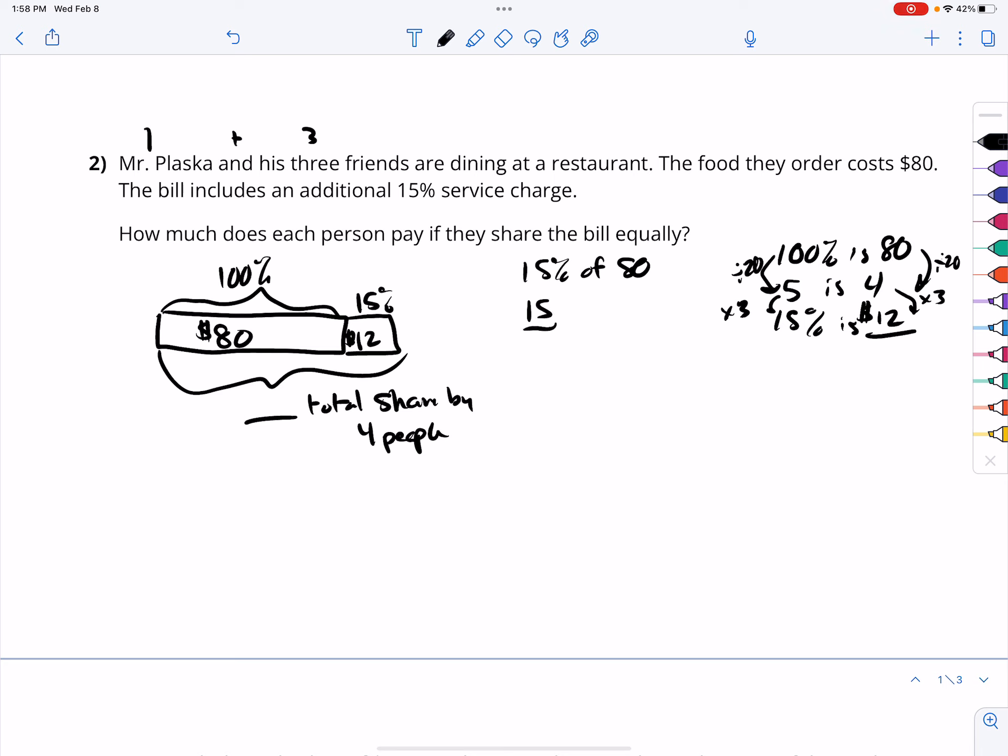Now, if we wanted to check this another way, 15%, or 15 out of 100, of 80. Let's do some simplifying. I'm going to first simplify this way by dividing by 10. So, I'm left with 15 tenths times 8, and these can both be divided by 5. I would get 3 halves times 8, which is 24 halves, or 12. So, we get the same answer.